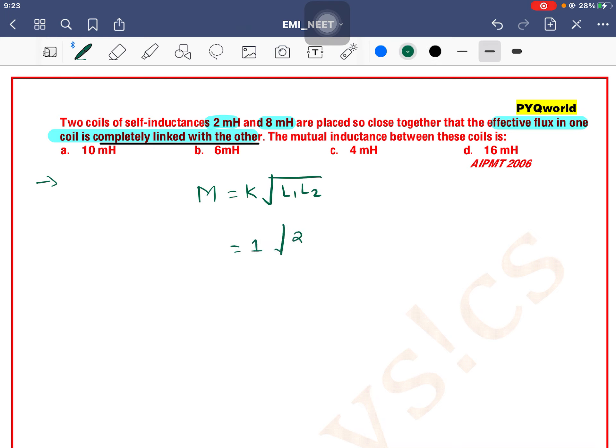L1 is 2 millihenry, meaning 2×10^-3, and L2 is 8×10^-3. So 2×8 equals 16, and the square root of 16 is 4.